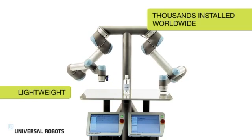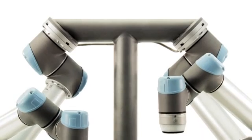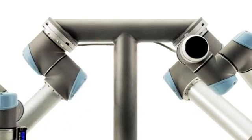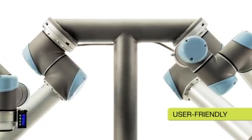Universal Robots has reinvented industrial robotics with lightweight flexible robot arms. Tasks previously thought impossible to automate due to cost and complexity are now achievable with the user-friendly robots.